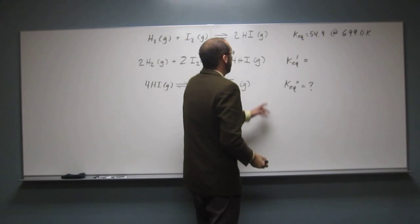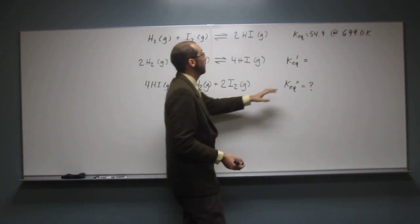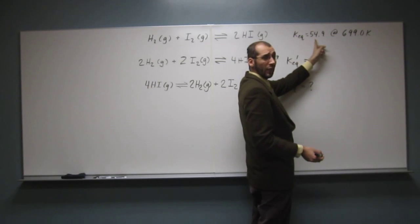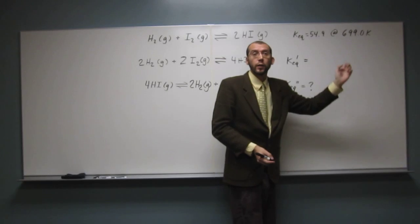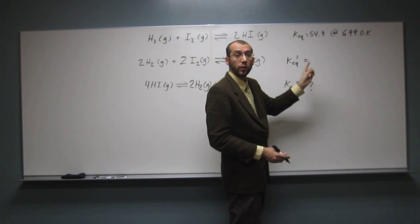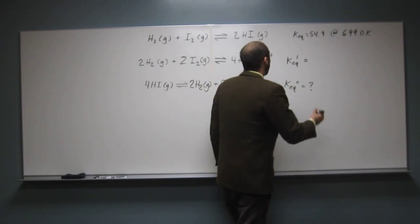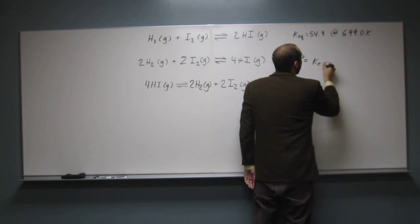So when we do that, when we multiply everything by 2, what we're going to do to the KEQ is square it. So we're going to raise it to the coefficient that we've multiplied it by.